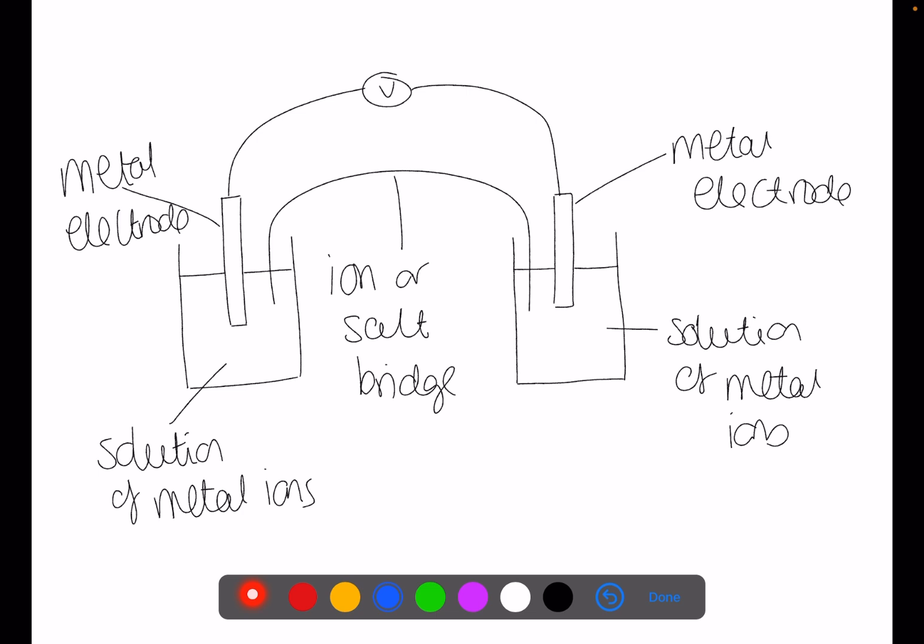Here is an example of a half cell. You have a beaker of metal ions with the metal dipped into them and then you do the same with your second metal. You join these two together with an ion or salt bridge. This is just a piece of paper which has been soaked in salt solution. The metal electrodes are then joined together using a voltmeter.